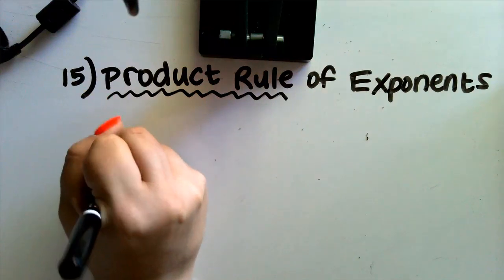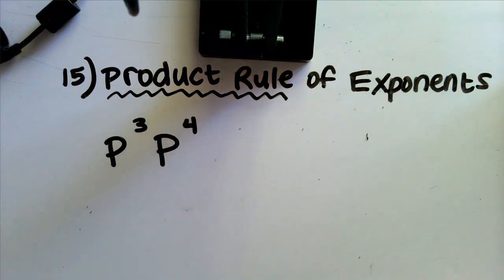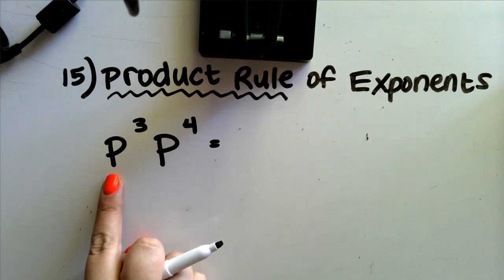So let's go ahead and write our example: p to the third times p to the fourth. Our job here is to both expand it and then also determine what the result is. What I want us to notice here first of all is that we are multiplying together two things.